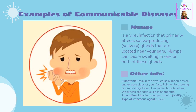Mumps is a viral infection that primarily affects saliva-producing glands located near your ears. Mumps can cause swelling in one or both of these glands. Symptoms include pain in the swollen salivary glands on one or both sides of your face, pain while chewing or swallowing, fever, headache, muscle aches, weakness and fatigue, and loss of appetite. Prevention: Measles, Mumps, Rubella (MMR) vaccine. Type of infectious agent: Virus.